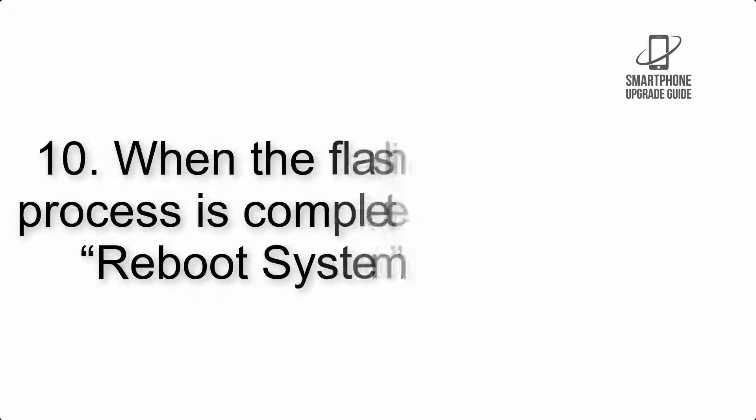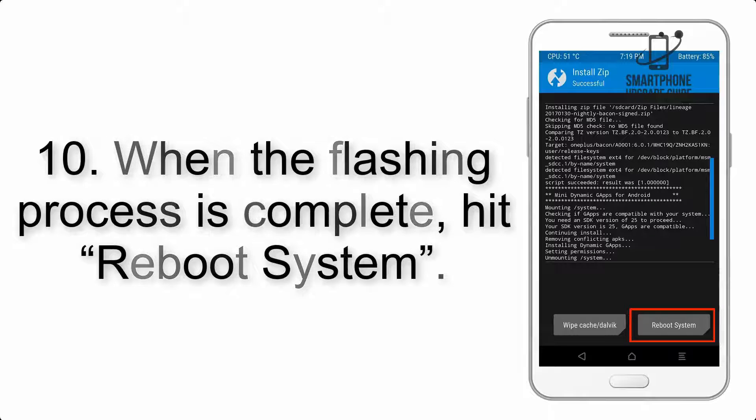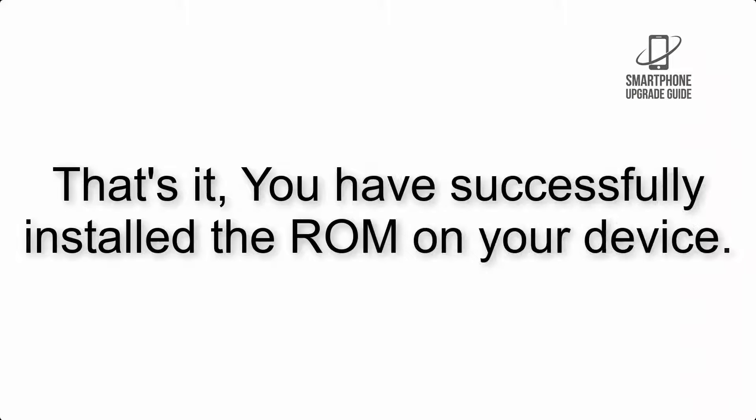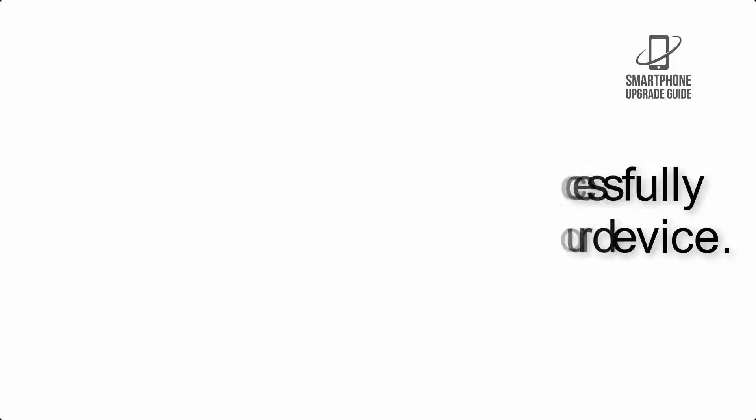Step 9: After GApps flashing completes, select Wipe Cache and Dalvik from the bottom left side of the screen and swipe to wipe. Step 10: When the flashing process is complete, hit Reboot System. That's it — you have successfully installed the ROM on your device.